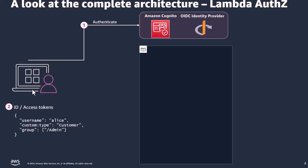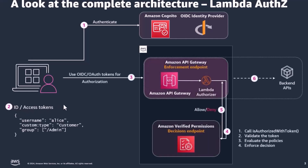Once the user authenticates, they get a set of JWT tokens — either ID tokens or access tokens. The application then presents these JWT tokens to Amazon API Gateway to authorize the request. Amazon API Gateway authorizes the request by calling a Lambda authorizer that then calls Amazon Verified Permissions to get an authorization decision.